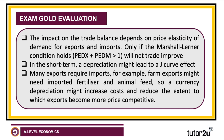Check out something called the Marshall-Lerner condition. Providing the sum of the coefficients of elasticity of demand for exports and imports are greater than one, then a fall in the exchange rate will lead to an improvement in net trade. However, in the short term, a depreciation could lead to a J-curve effect. Search on Google or YouTube for J-curve effect and Marshall-Lerner condition if you need a bit of revision on that.